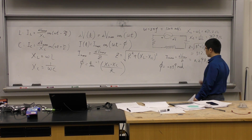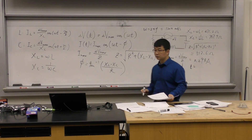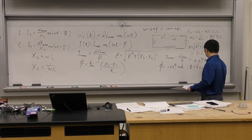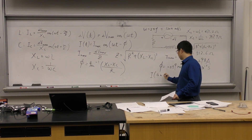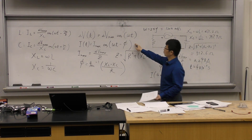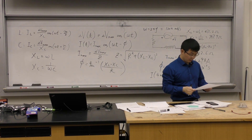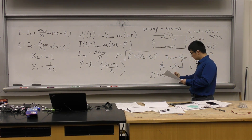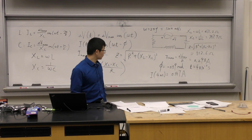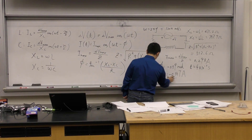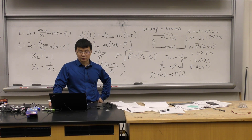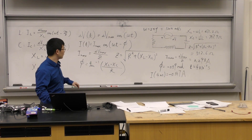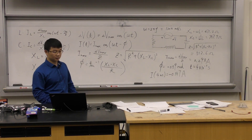IMAX = VMAX / Z. I found IMAX = 0.293 amps. You still need the phase angle phi: phi = arctan((XL − XC) / R), using the XL, XC, and R from the problem, giving a value in radians. Plug in t = 4 milliseconds and you'll get the current — it's a negative value because the current changes direction all the time in an AC circuit.